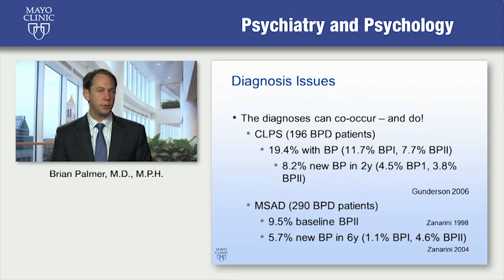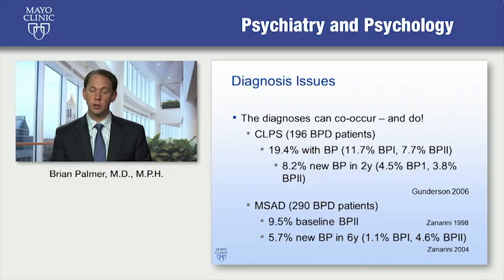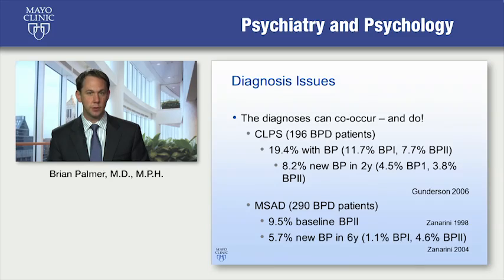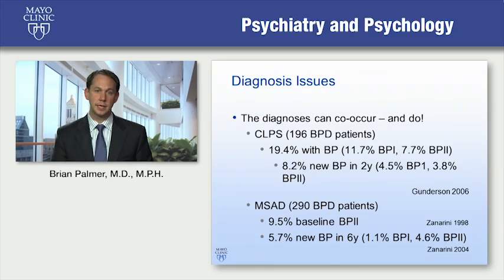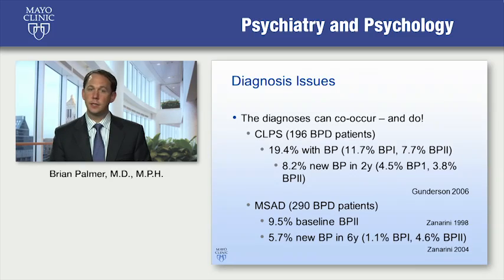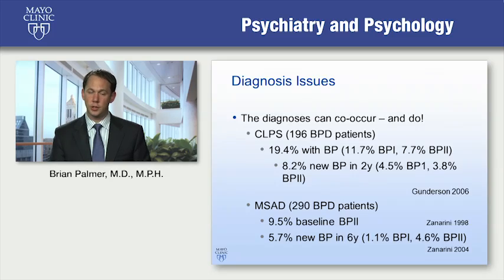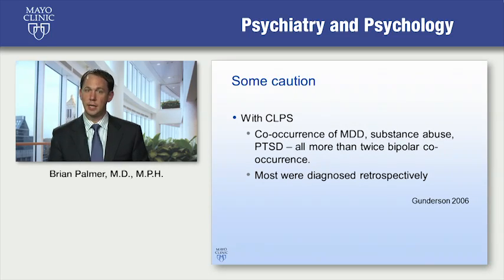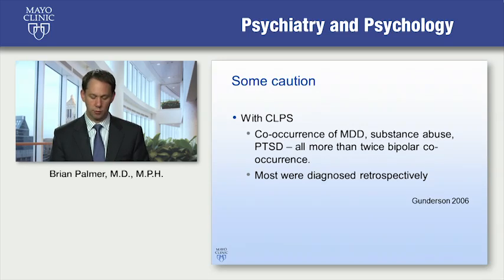These diagnoses can and frequently do co-occur. In the Collaborative Longitudinal Personality Disorder study — a large multicenter study with 196 borderline patients — 19.4 percent had bipolar at study entry, and an additional 8.2 percent were seen to have bipolar over the first two years. In the McLean Study of Adult Development, 9.5 percent had baseline bipolar and 5.7 percent developed new bipolar over the first six years. Some caution is indicated: depression, substance use, and PTSD co-occurrence were all more than twice the bipolar co-occurrence, and most bipolar diagnoses were made retrospectively.